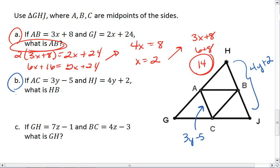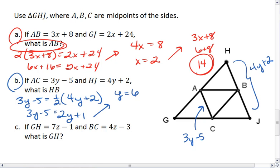Well, if we were to... Another way you can do this is you can say that 3Y minus 5 is equal to half of the third side. 3Y minus 5 equals 2Y plus 1. Y equals 6.